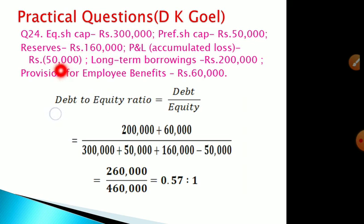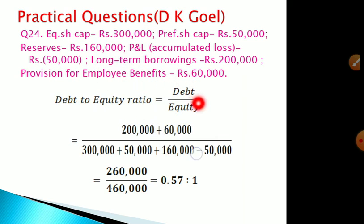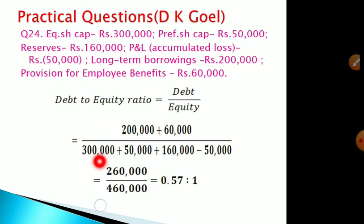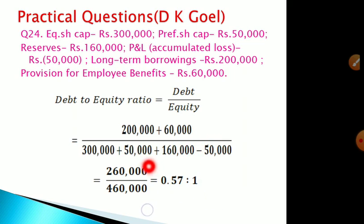Long-term borrowings (2 lakh) and provision for employee benefits (60,000) form the debt — total debt is 2 lakh 60,000. Equity includes equity share capital 3 lakh, preference share capital 50,000, reserve 1 lakh 60,000, less loss of 50,000 — total equity is 4 lakh 60,000. Debt to equity ratio: 2,60,000 divided by 4,60,000 gives an answer of 0.57:1.